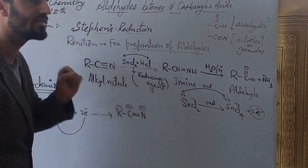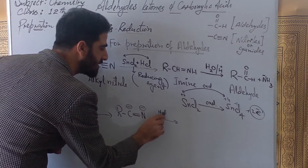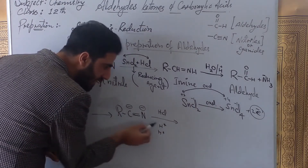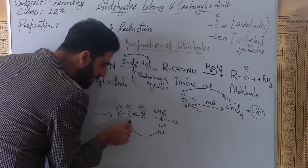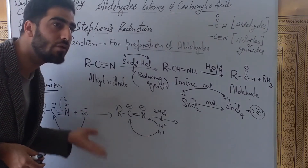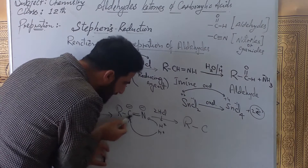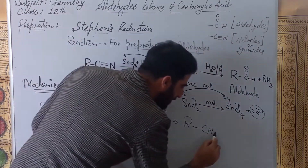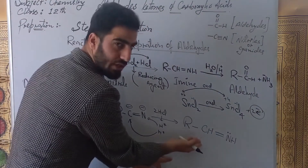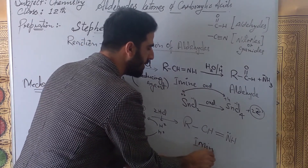This is an unstable condition — charge makes the system unstable. Since HCl is present in the medium, H⁺ ions are available. The negative charge on nitrogen attracts H⁺, which adds to the nitrogen. This neutralizes the charge. The result is R-CH=N, which is the imine — our intermediate product. The alkyl nitrile has been converted to an imine through reduction.